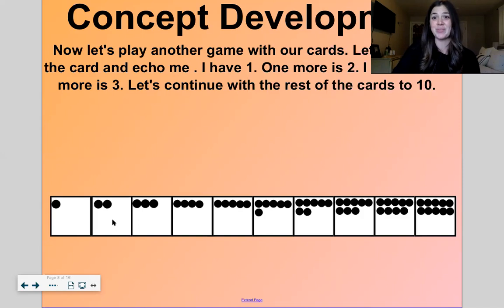I have two. Echo, I have two. One more is three. One more is three. So you're just going to copy the next time, okay? I have three. I have three. One more is four. One more is four. Good, it's kind of like a song. I have four. I have four. One more is five. One more is five.